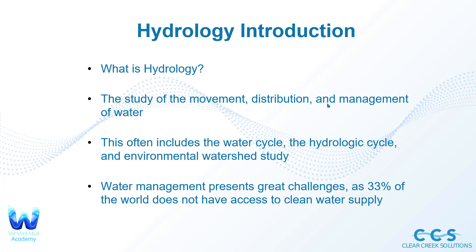Water management today presents great challenges as 33% of the world does not have access to a clean water supply. Especially as the population of the world continues to increase, access to that clean water supply is going to be very crucial and very critical. We want to make sure we can get clean water to everyone, have stormwater mitigation methods that keep everyone safe, keep economic damage from occurring, and just overall make the world a better place. That's the idea of water resources engineering. Clean water supply and environmental engineering — ensuring that water is filtered correctly and safe for the general population is a big deal. With 33% lacking that access, this field is only growing and getting more important.